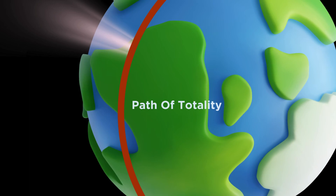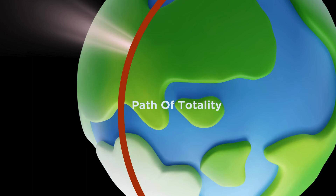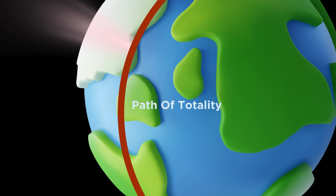The path of totality is a narrow track where a total solar eclipse is visible. Being within this path offers a surreal experience — as daylight turns to twilight, temperature drops, and animals often behave as if night has fallen.